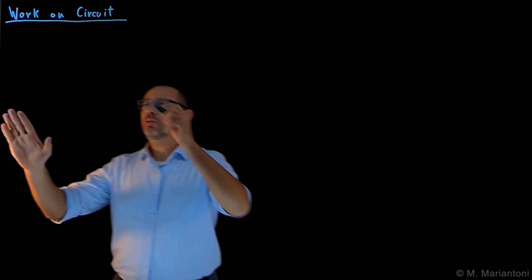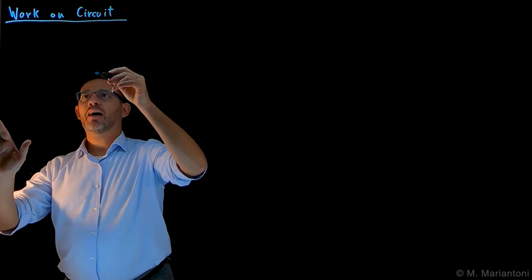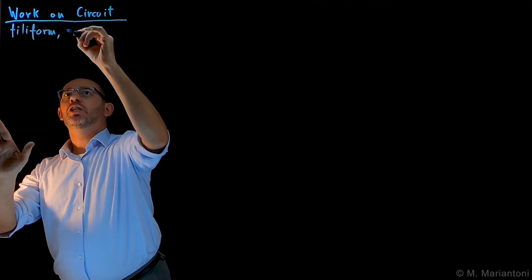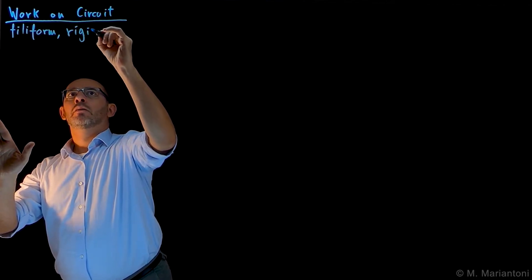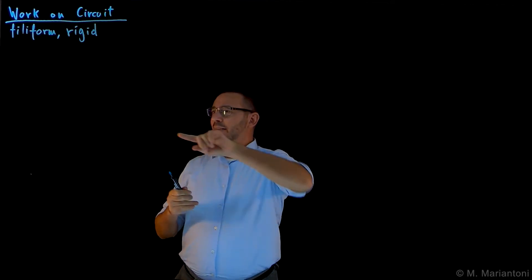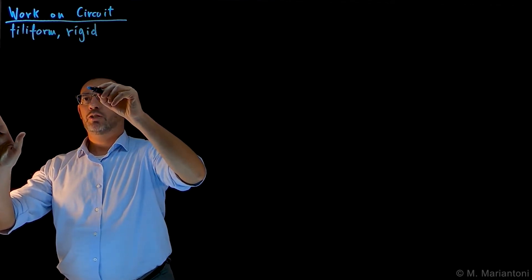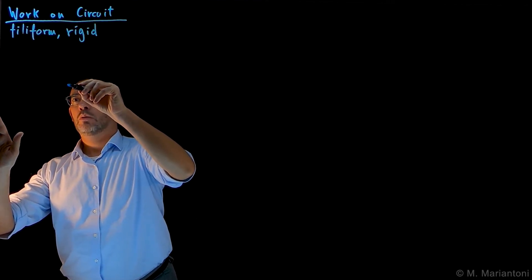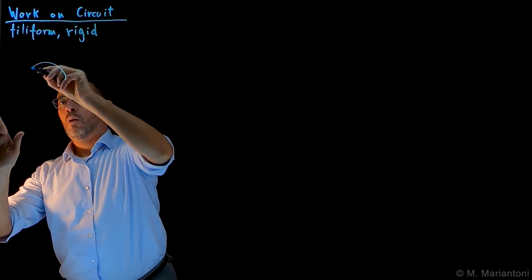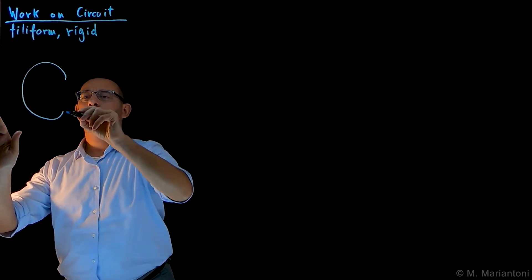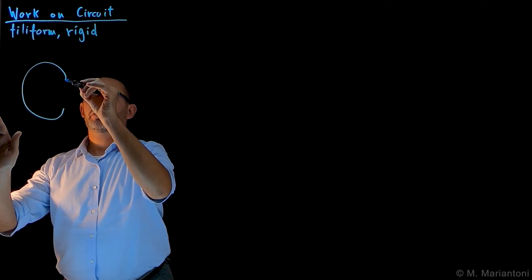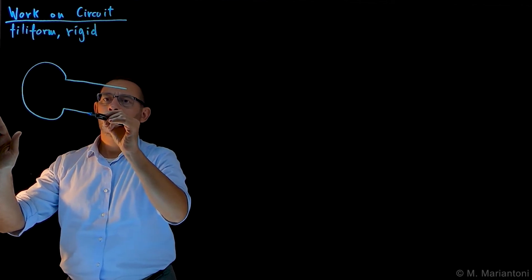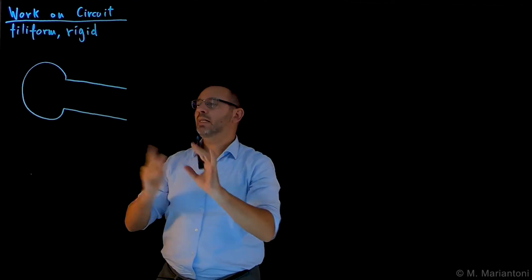In order to do so, let us first consider the following example where we have a filiform and rigid circuit. This circuit is a loop, which I will sketch here in this fashion, and eventually goes into a pair of tracks, looking like that, which continue. This is our circuit.